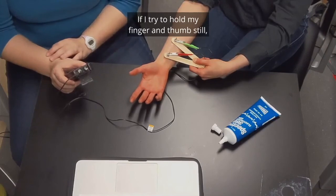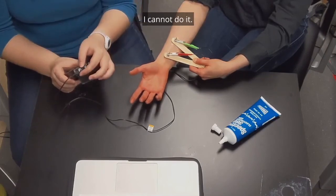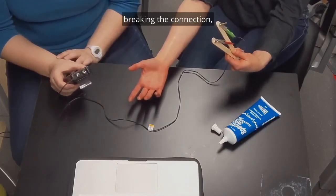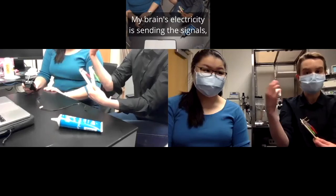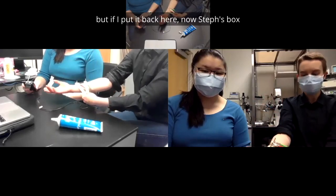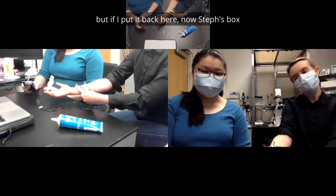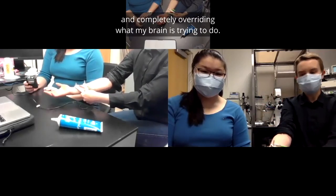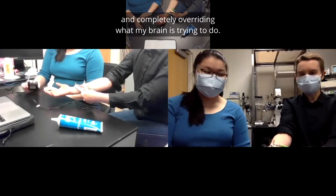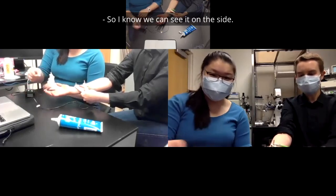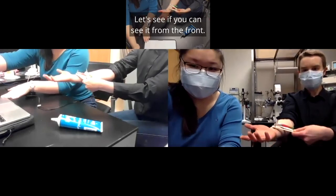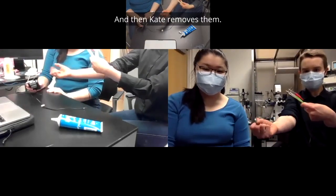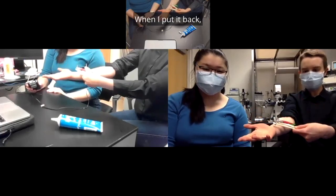So we're going to turn it up a little more. Now you can see that my hand is starting to move. That's not something that I'm doing. And it's actually not something that I can stop. Even if I try, if I try to hold my finger and thumb still, I cannot do it. But if I remove the sticks from my arm, breaking the connection, now I'm in control of my hand again. My brain's electricity is sending the signals. But if I put it back here, now Steph's box is sending the electric signals to my muscle and completely overriding what my brain is trying to do.